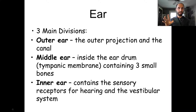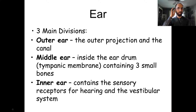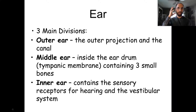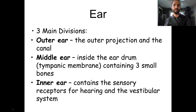Otitis externa, or swimmer's ear, is infection or inflammation of the ear canal. It typically happens when earwax buildup traps water after swimming. The tissue swells when wet, trapping the water. If bacteria get into this stagnant fluid — which there always are — you develop an outer ear infection.